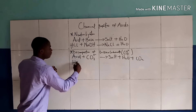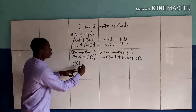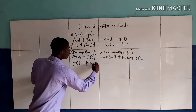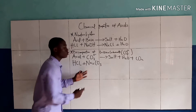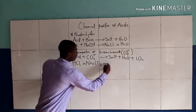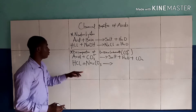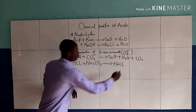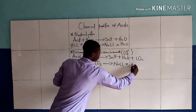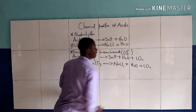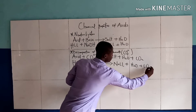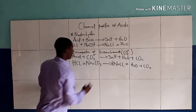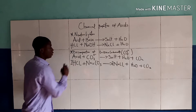For example, hydrochloric acid reacts with a trioxocarbonate like sodium trioxocarbonate, which is also called soda. The products we get are sodium chloride, water, and carbon dioxide (CO₂). Let's balance the reaction — we put two here and also two here.